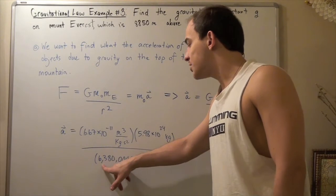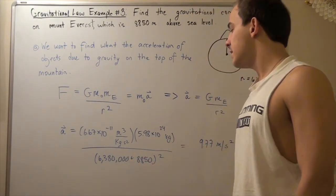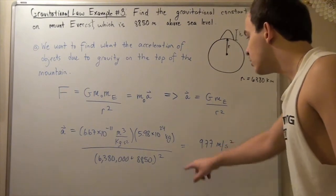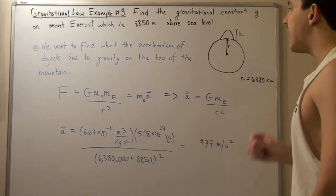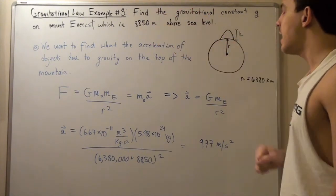We get 6,380,000 meters plus 8,850 meters squared equals. You plug that into the calculator, and we find our g on top of Mount Everest is 9.77 meters per second squared.